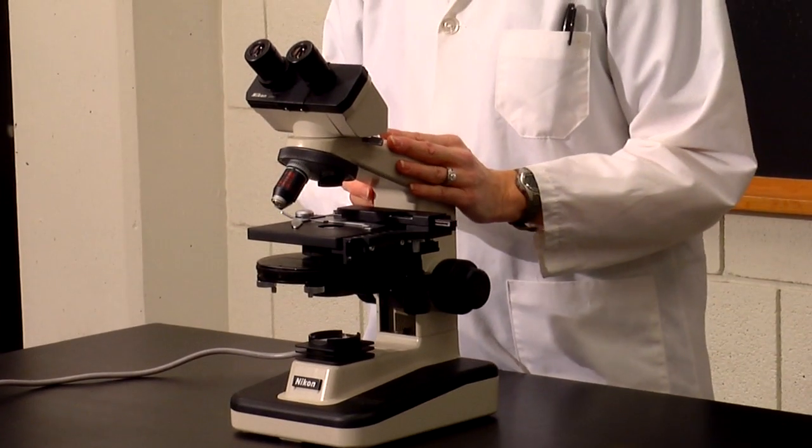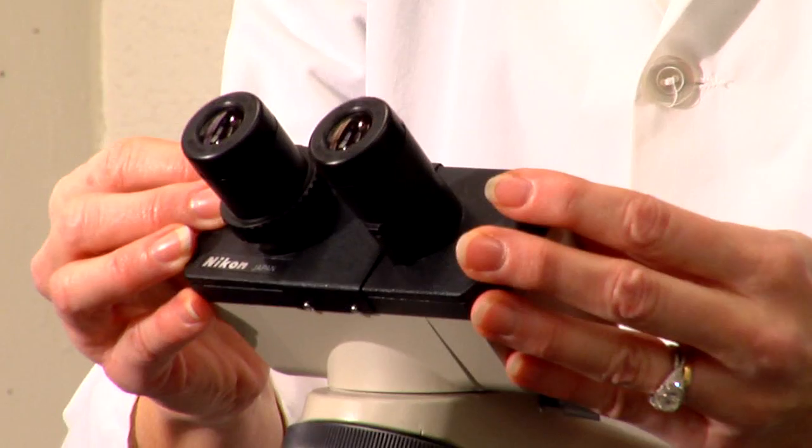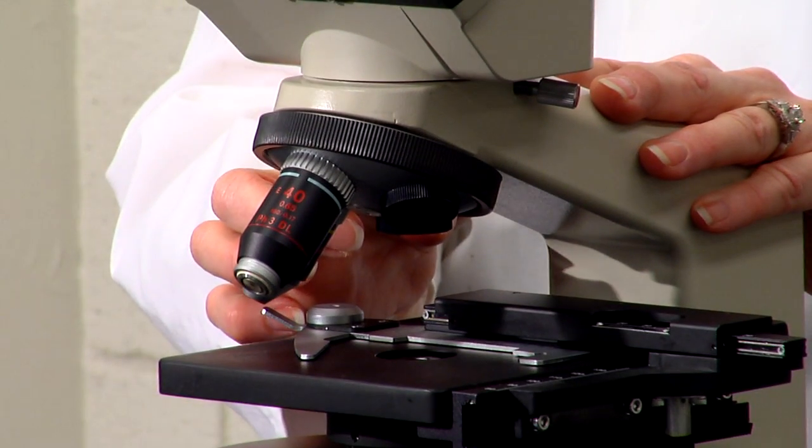This is called a compound microscope because it has two magnifying lens systems in series. This is unlike the dissecting microscopes we have used, which have a single magnifying lens. The compound microscope has a lens close to the eye, the ocular lens, and it has a lens close to the object being viewed, or the objective lens.